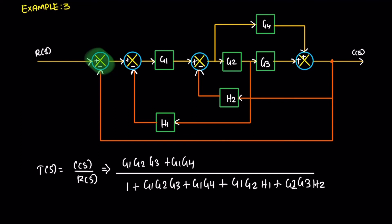And one more thing. The same feedback, the same summing point. This way is also possible. The gain value for this feedback is G4 and H2.